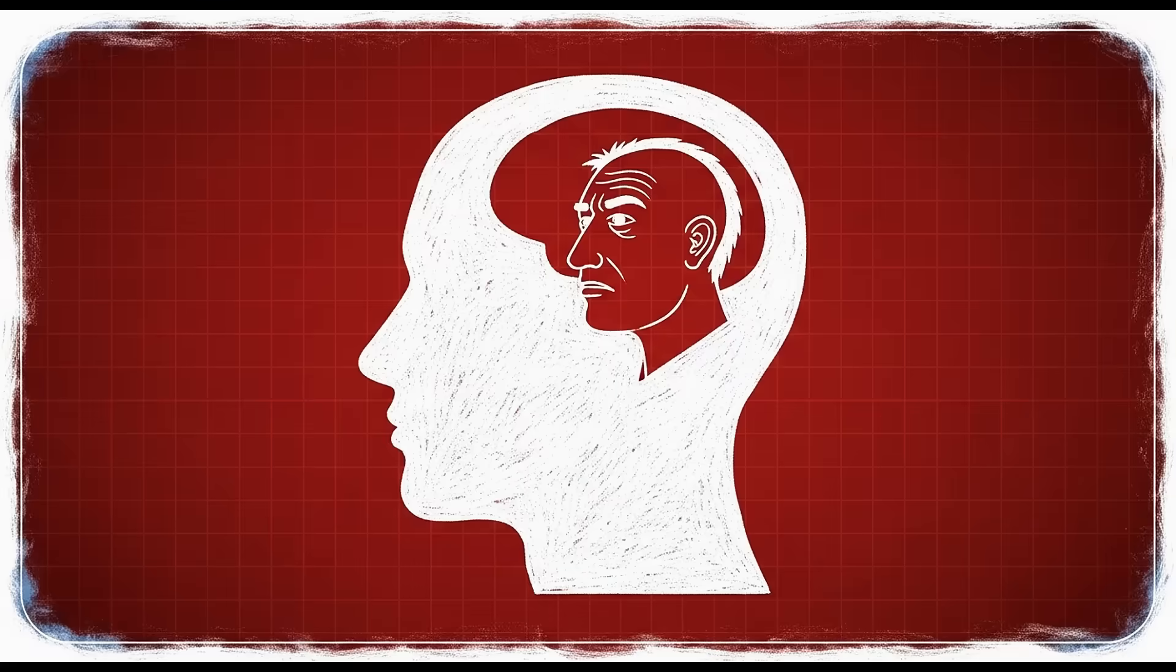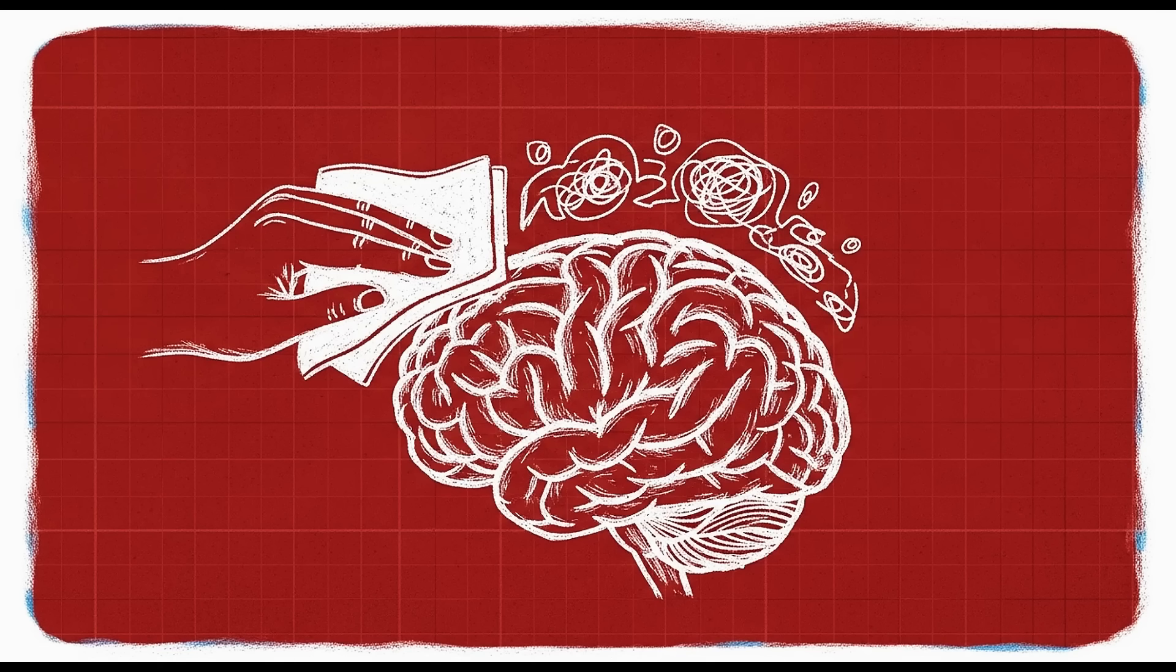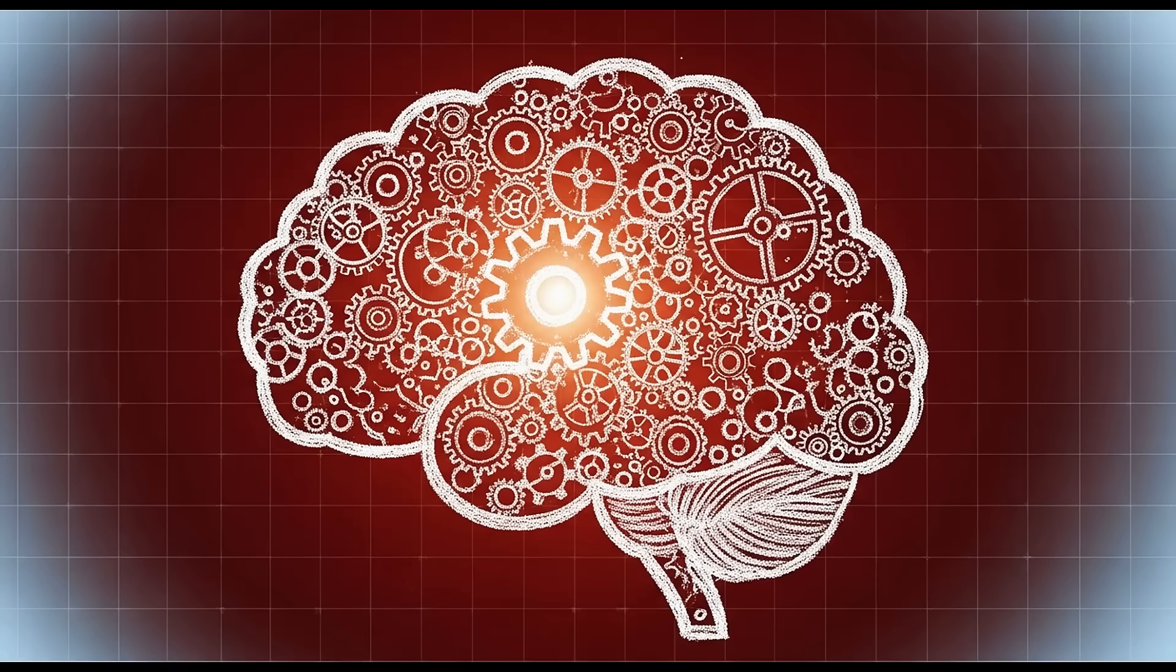That's why scrolling feels so compelling. Every swipe might reveal something interesting, so your brain floods you with dopamine to keep you searching. But here's where it gets dark. When you get too many easy dopamine hits, your brain adapts.